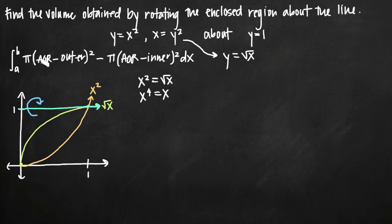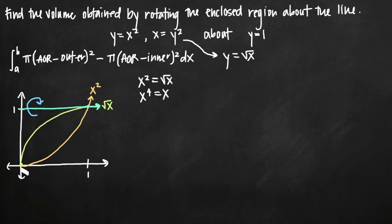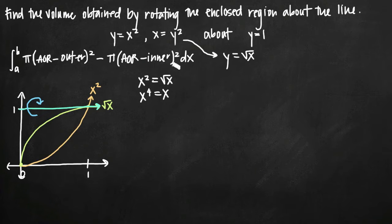Now let's look at our formula. The volume is the integral from a to b, where a and b are the x values of our intersection points — so from 0 to 1. We have pi times the quantity (axis of rotation minus the outer curve) squared, minus pi times the quantity (axis of rotation minus the inner curve) squared. The axis of rotation is y equals 1, so that value is 1.